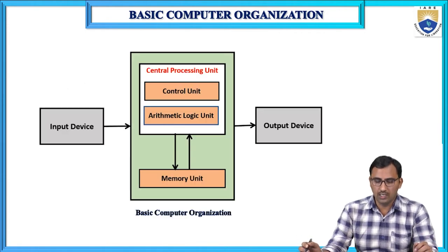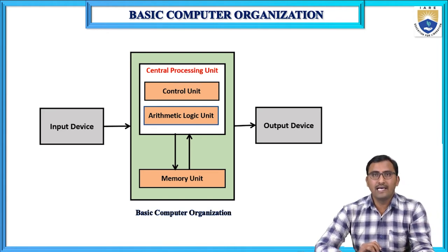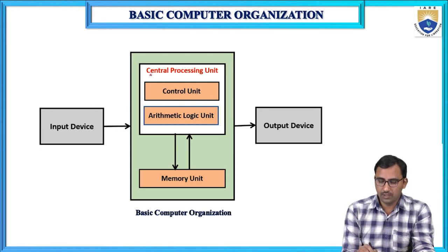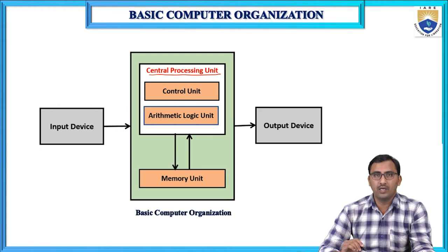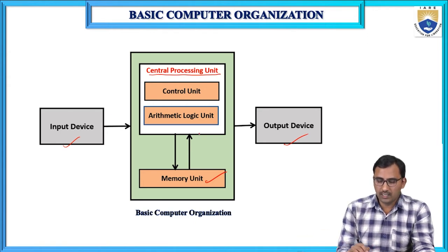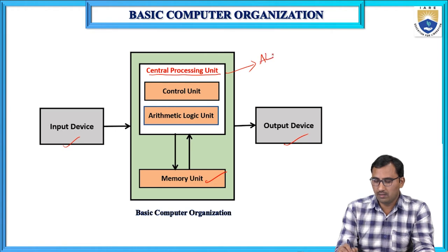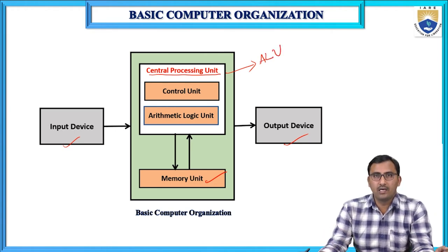Here you can see the basic computer organization. It has three basic components or subsystems. The first one is the CPU (central processing unit), the second one is the memory unit, and the third one is the input or output devices (I/O devices). These are the three main important subsystems of the basic computer system. The CPU contains three important parts again.